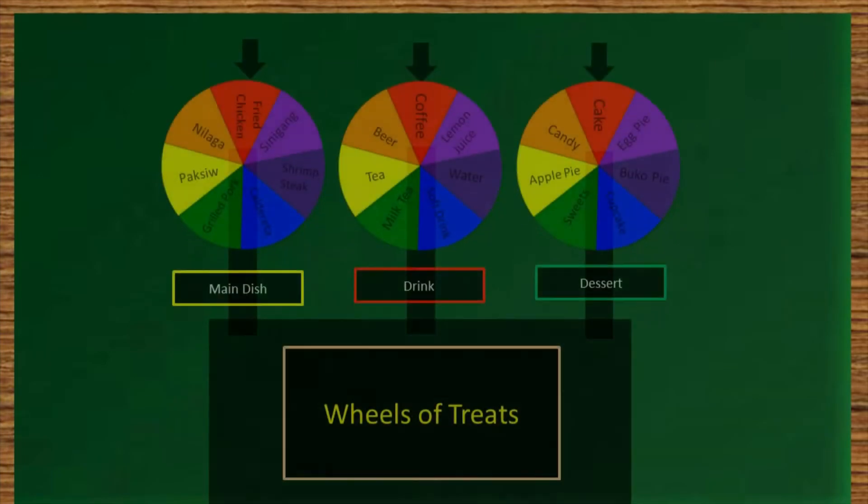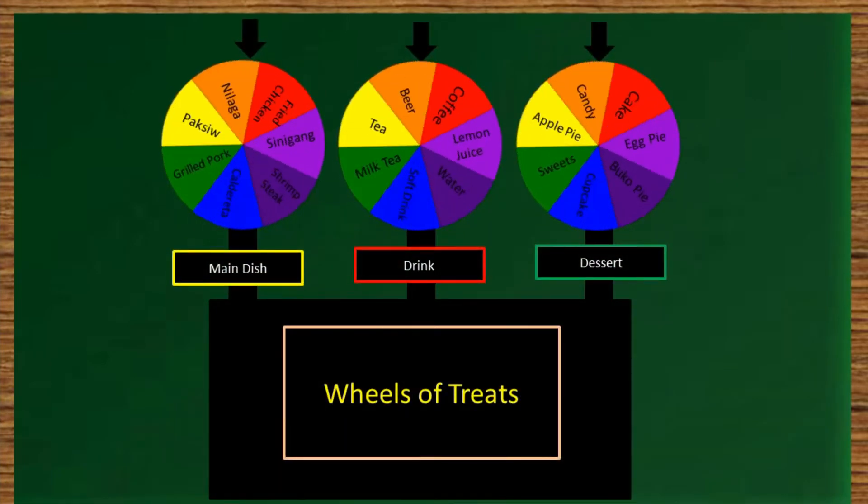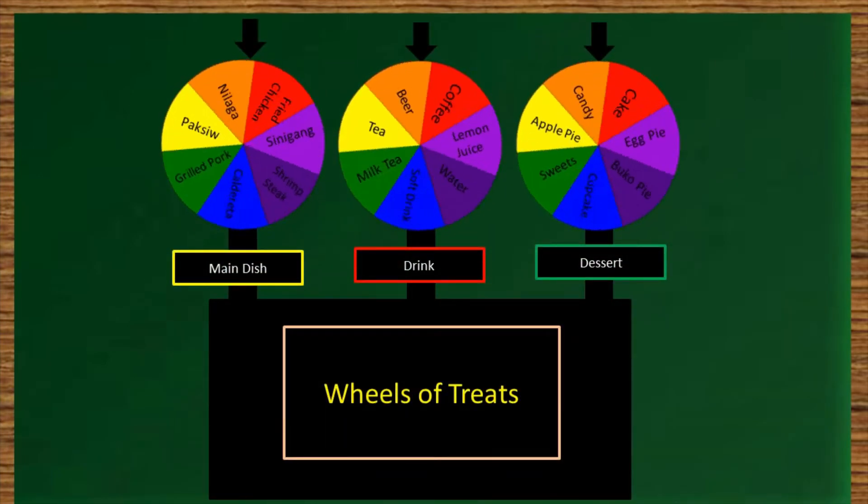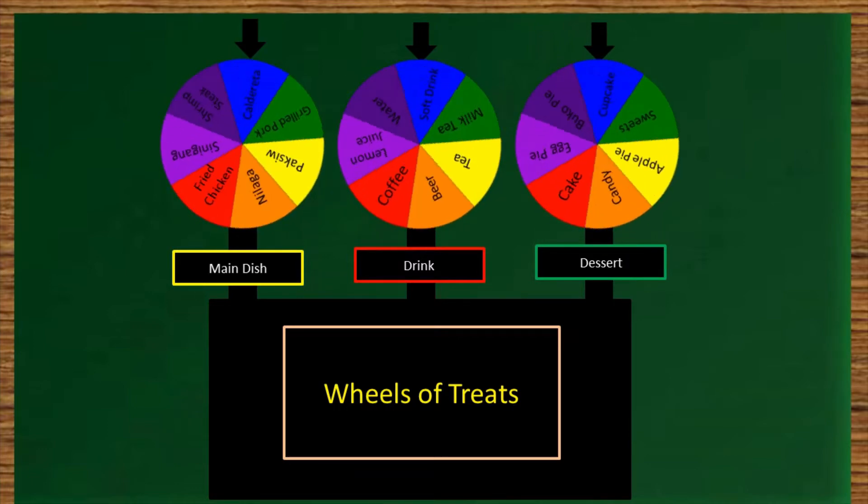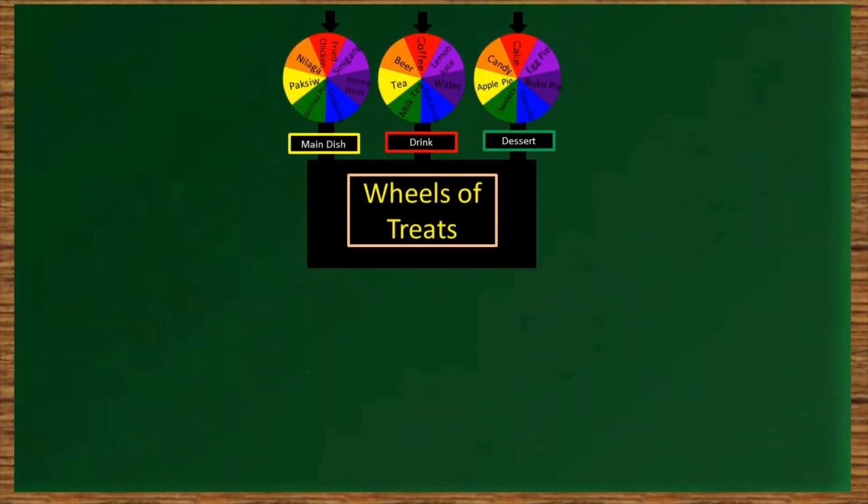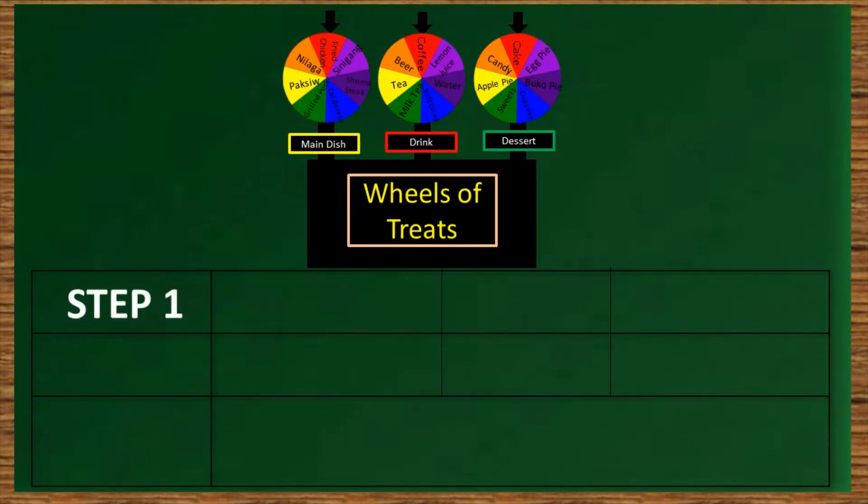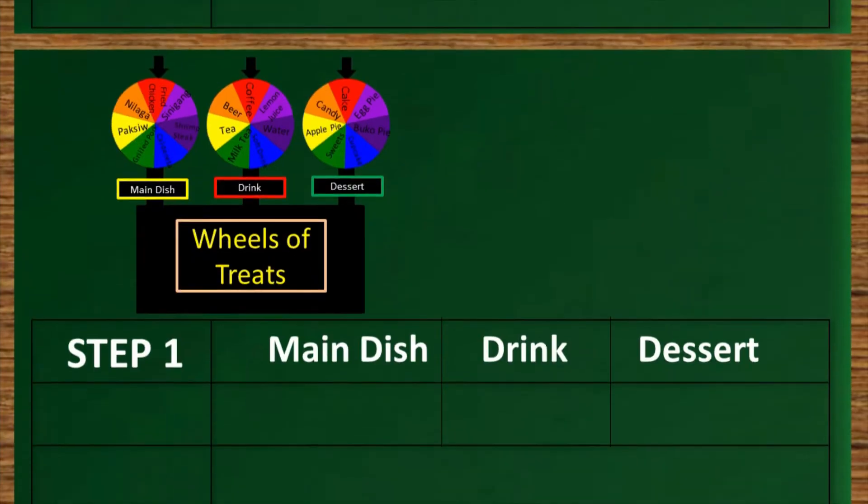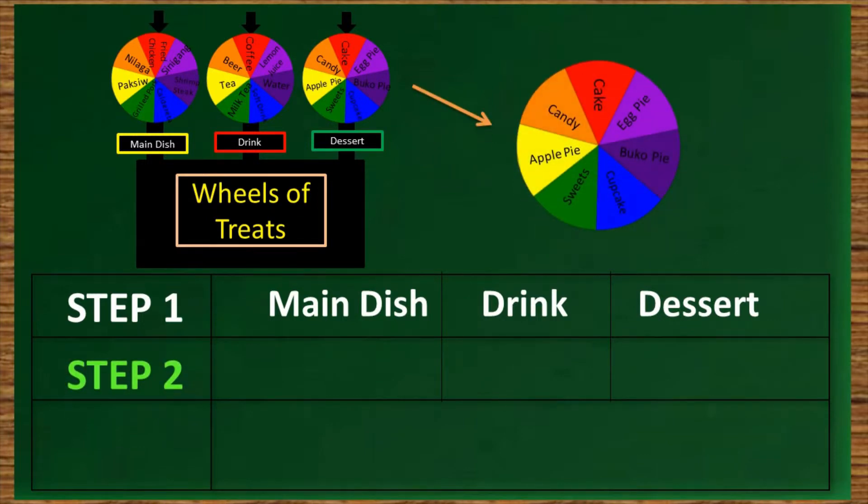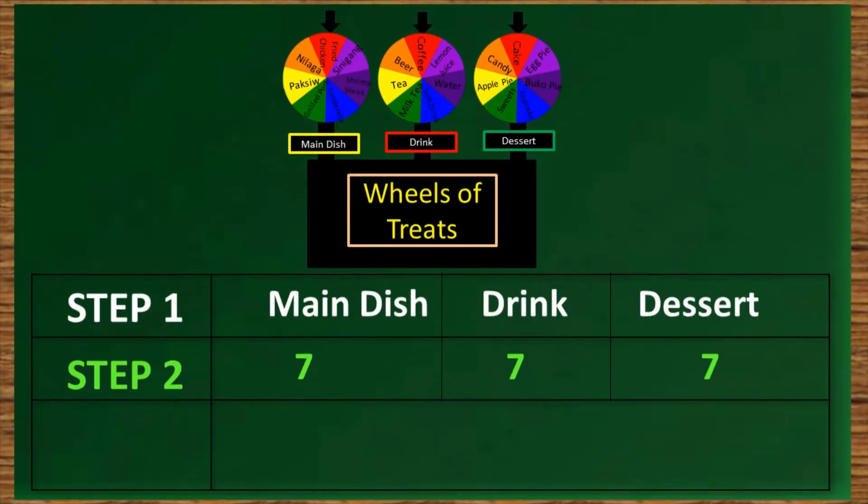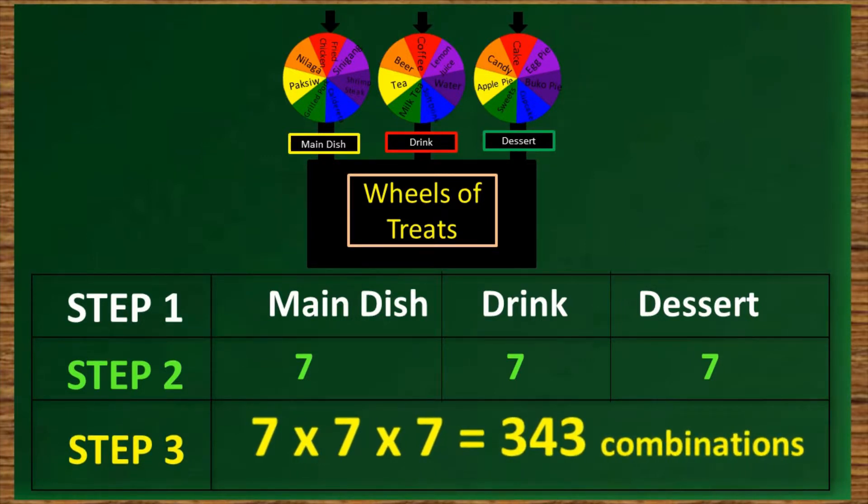Going back to the question we hung earlier, how many possible outcomes can we get if we continue spinning the wheels of treats? Let's do the same process. Step 1: We have three events in the given - the main dish, drink, and dessert. Step 2: Each event has seven options. And Step 3: Multiplying all of them will give 343 possible outcomes.